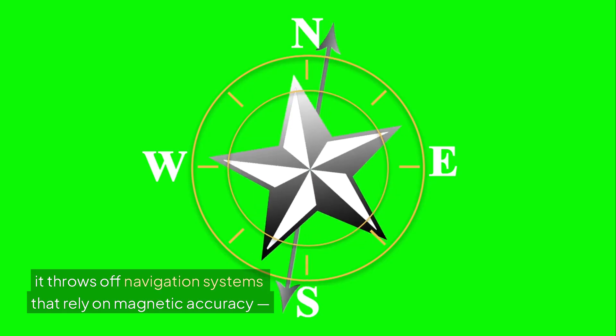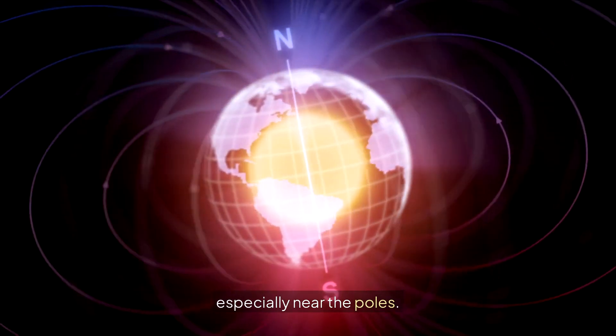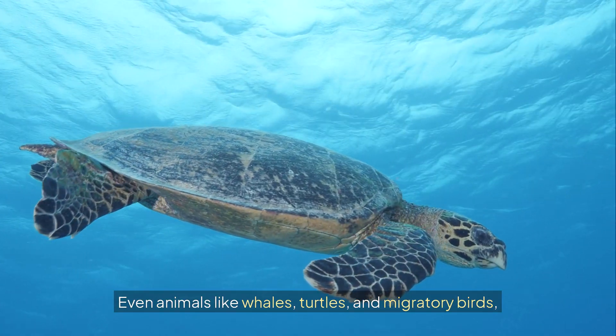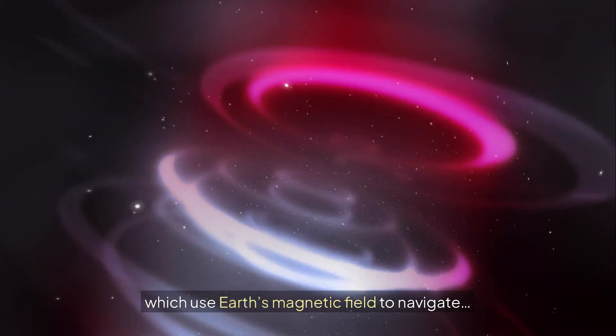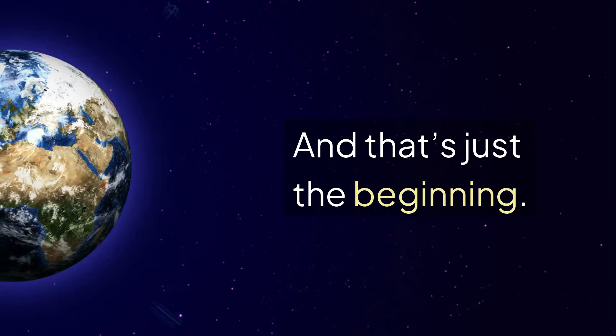When the field shifts unexpectedly, it throws off navigation systems that rely on magnetic accuracy, especially near the poles. Even animals like whales, turtles, and migratory birds, which use Earth's magnetic field to navigate, can become confused or lost. And that's just the beginning.